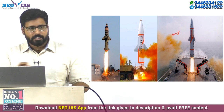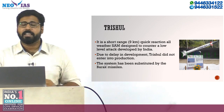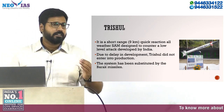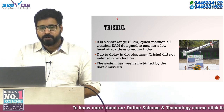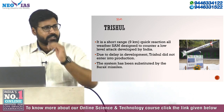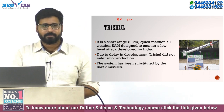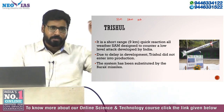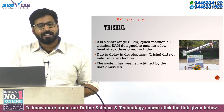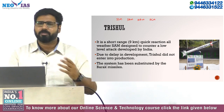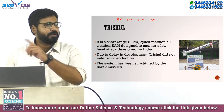Missiles can be classified based on where they are launched from and what they attack. Surface-to-surface missiles are launched from the surface to attack surface targets. Surface-to-air missiles (SAMs) are launched from the surface to attack aerial targets. Air-to-air missiles are launched from a flying platform to attack another flying platform. Air-to-ground missiles are launched from a flying platform to attack surface targets. Anti-tank missiles are also a category.